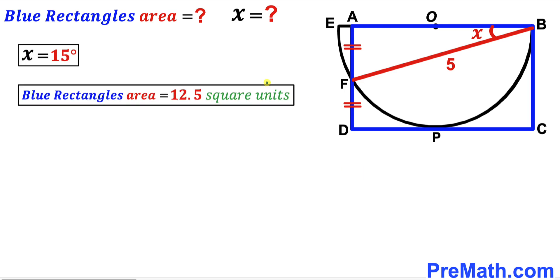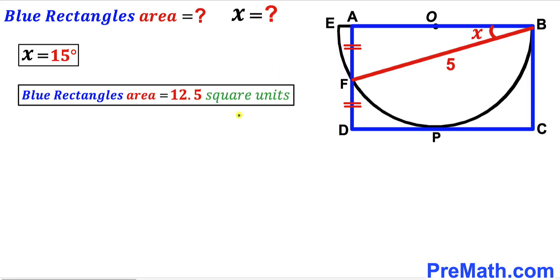After all the calculations, angle X turns out to be 15 degrees, and the area of the blue rectangle is 12.5 square units — that's our final answer. Thanks for watching, and please don't forget to subscribe to my channel for more exciting videos. Bye!